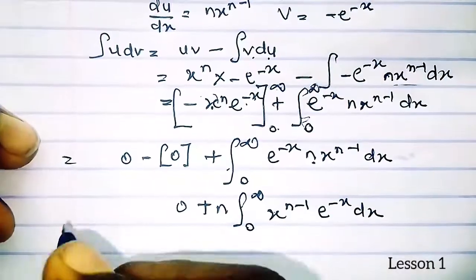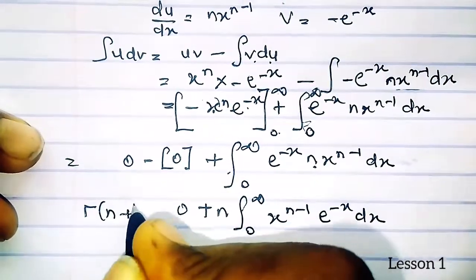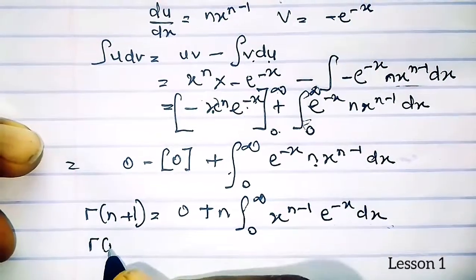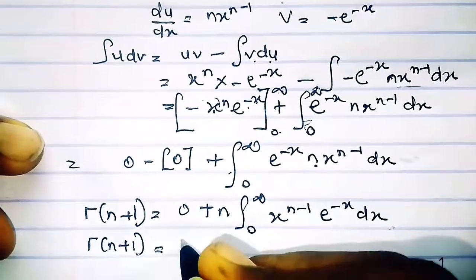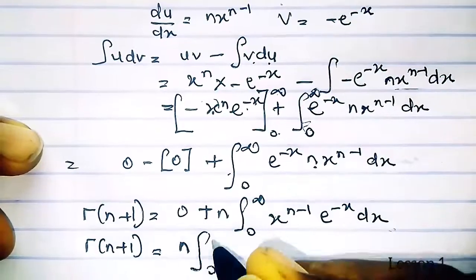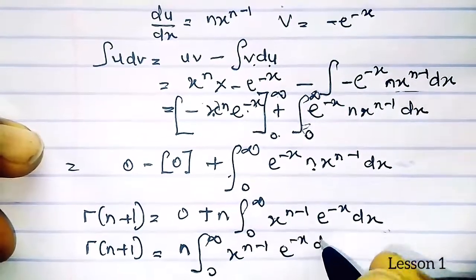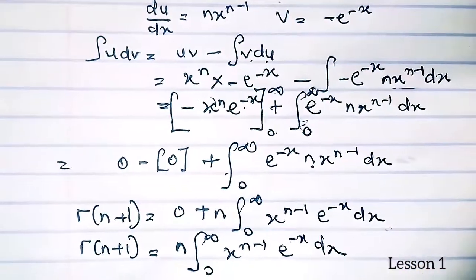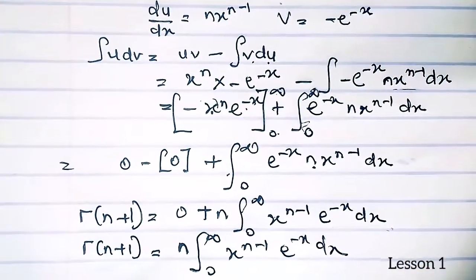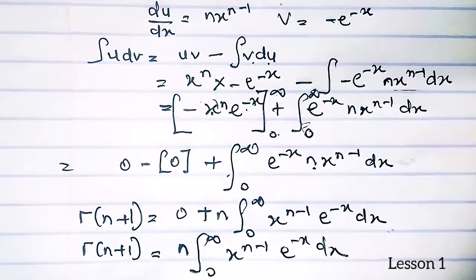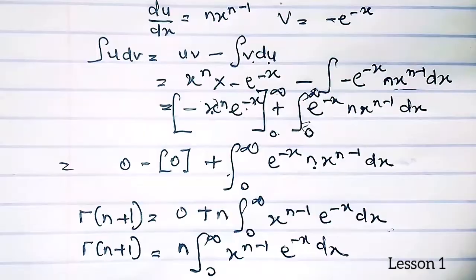Recall we started by setting gamma of n plus 1 equal to this integral. So gamma of n plus 1 equals n times the integral from 0 to infinity of x to the n minus 1 times e to the minus x dx. I'm proving all these steps to deduce a particular formula that helps solve complex integration by parts problems.